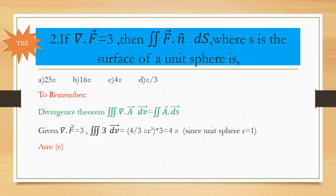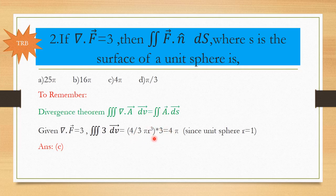Next problem, asked in TRB: If ∇·F⃗ = 3, find ∬ F⃗ · n̂ dS where S is the surface of a unit sphere. By Divergence Theorem, surface integral equals volume integral of divergence. Substituting ∇·F⃗ = 3, we get ∭ 3 dV. Volume of a unit sphere is (4/3)πr³; with r = 1, the answer is 4π. Option C is correct.